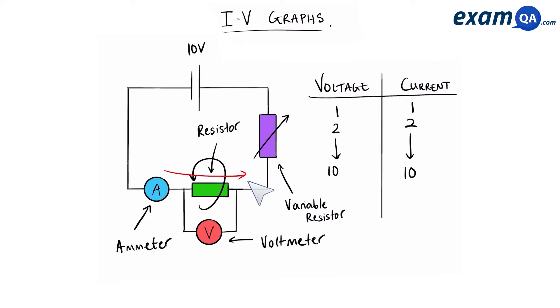Now we can use the same test circuit for our two other types of components the diode and the filament lamp. Once you've collected all of our data we will then plot this making sure that the current is on the y-axis and the voltage is on the x-axis.